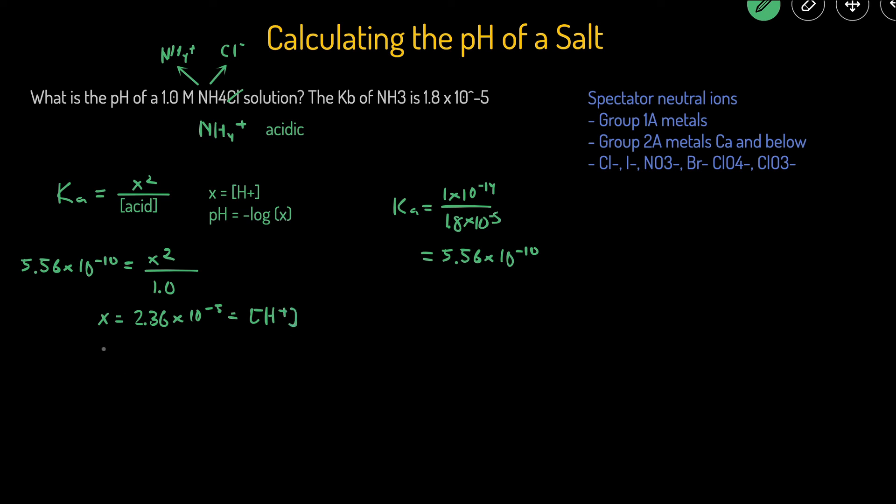And x, when you're using the Ka shortcut, is equal to the H plus concentration. And pH is just negative log of H plus, so negative log of 2.36 times 10 to the negative 5. And that comes out to be 4.63.